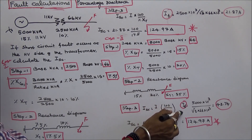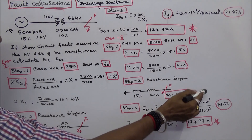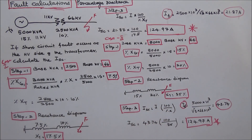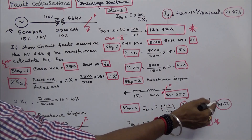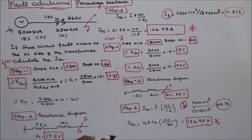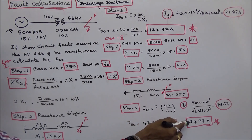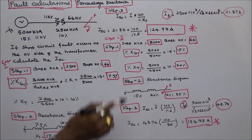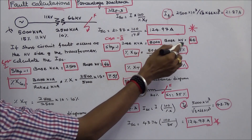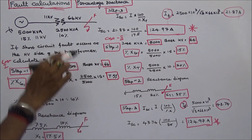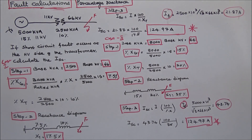Full load current is equal to (5000 × 10³) divided by (√3 × 66 × 10³), which equals 43.74 amps. Therefore, short circuit current ISC is equal to 43.74 × 100 divided by 35, which equals 124.97 amps with base kVA of 5000 and base kV of 66. Both cases give the same result, confirming the calculation. Thanks for listening.